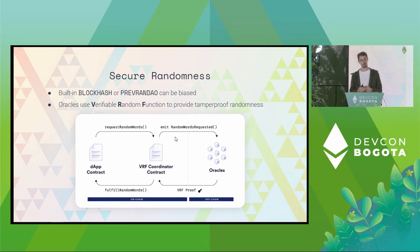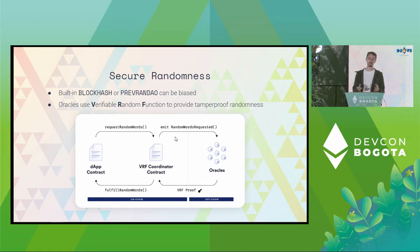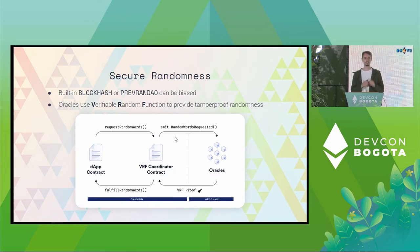Since the merge, there's also a second opcode, prevrandao, which is a little bit better than block hash, but which is still manipulable by block producers. The output of both can be biased. So if your contract needs secure randomness — for example, for running a lottery or for doing an NFT mint where you assign valuable random attributes — these are not good enough.